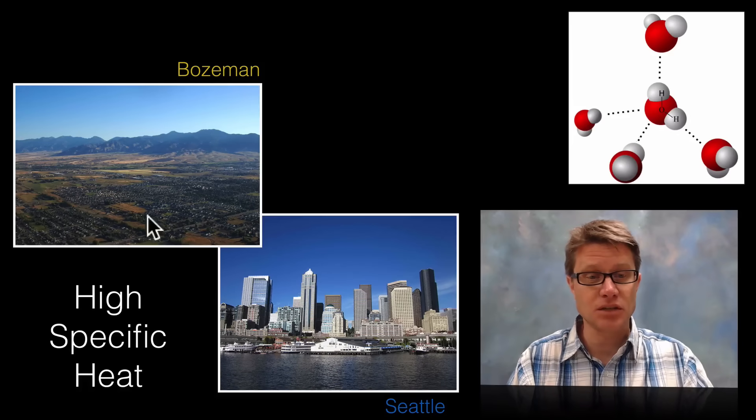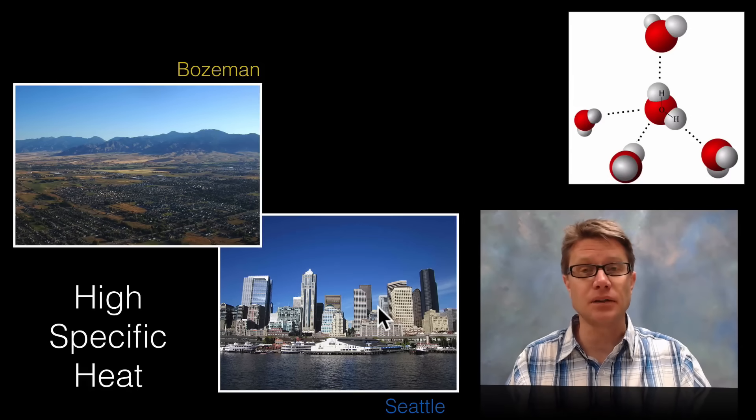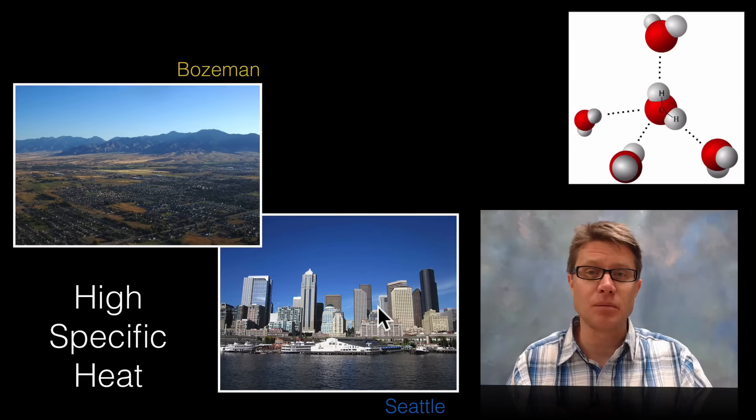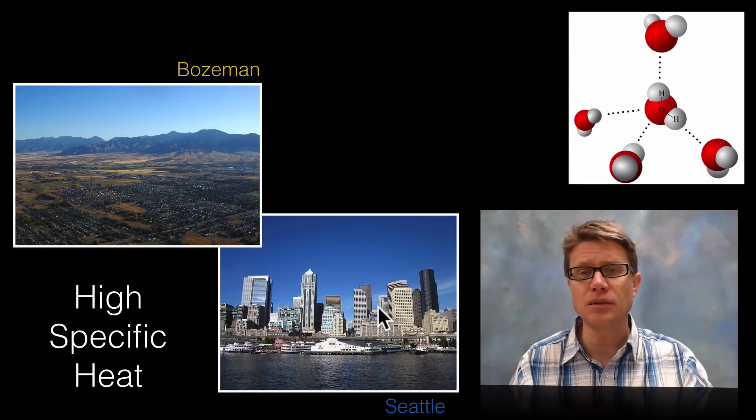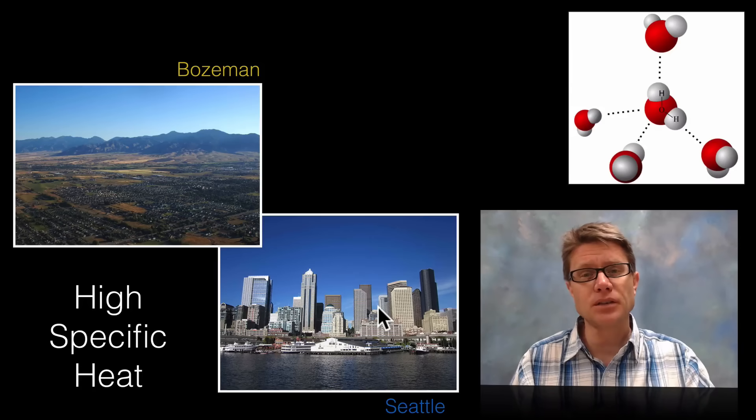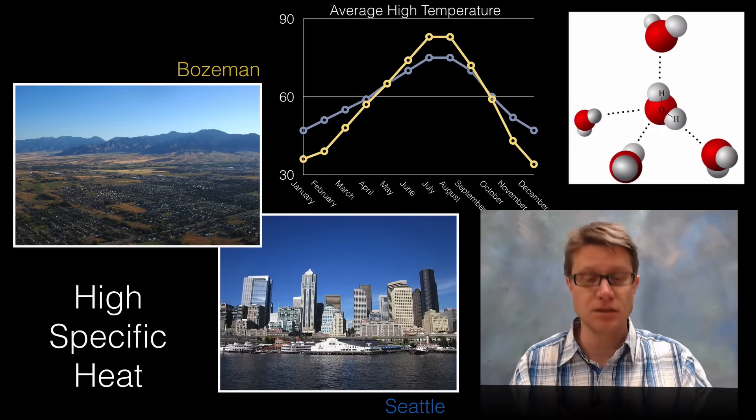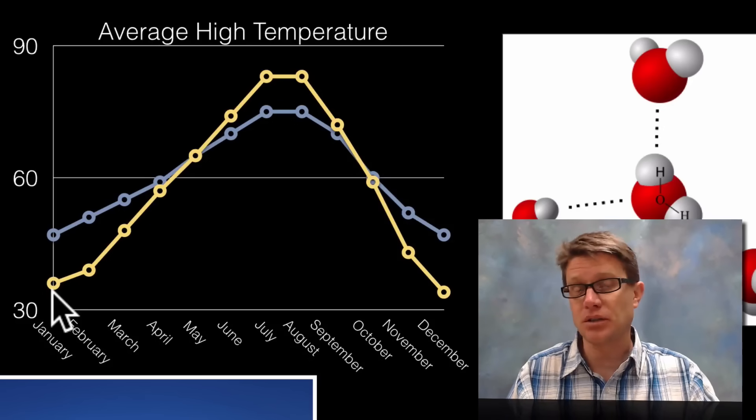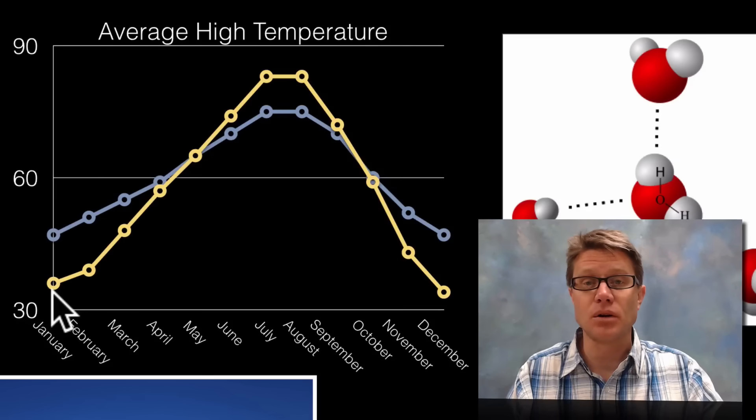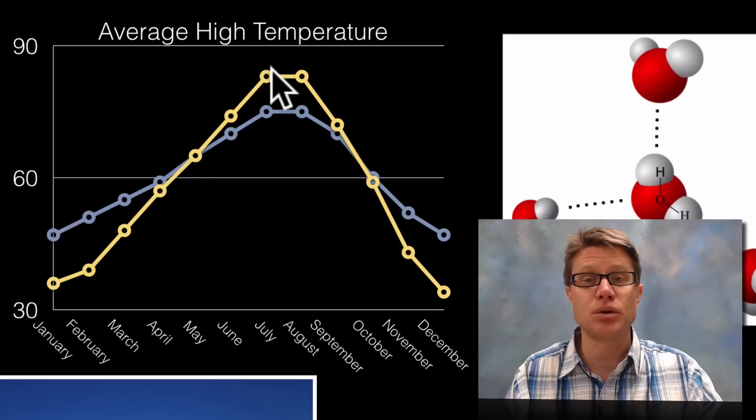We're at about the same latitude as Seattle. Seattle instead of being surrounded by mountains is surrounded by water. Since that water has this high specific heat, it moderates their temperature. This is the average high temperature in Bozeman and in Seattle. You can see Bozeman is this yellow line. In January it's going to be in the 30s or high 30s, and then in the summer it's going to be in the upper 80s, pushing 90.